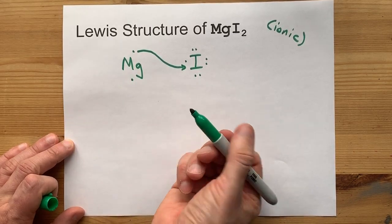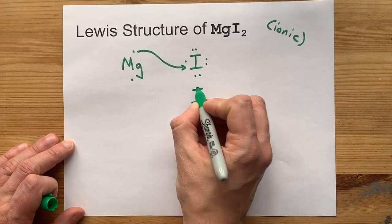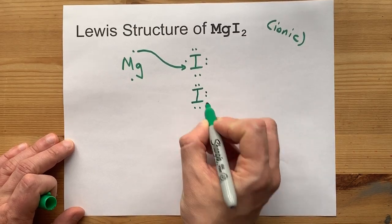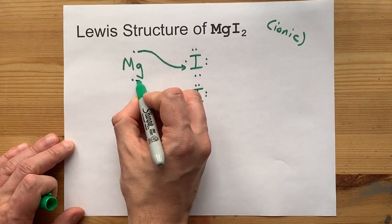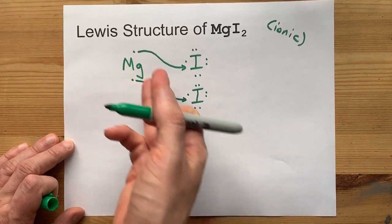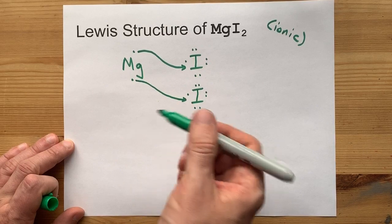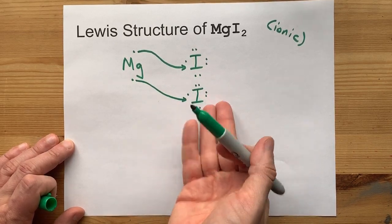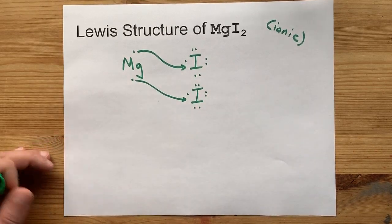Where is it going to go? If you give yourself a second iodine atom with seven valence electrons, that electron can go there. Magnesium will be left with none, ideal. And this iodine will also have a full octet of eight electrons.